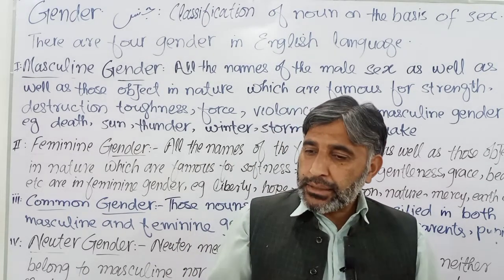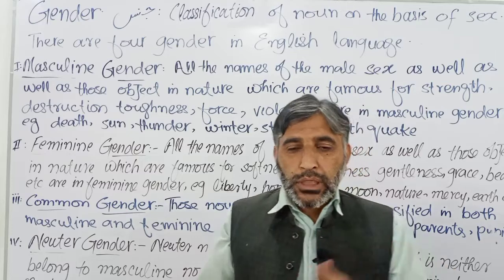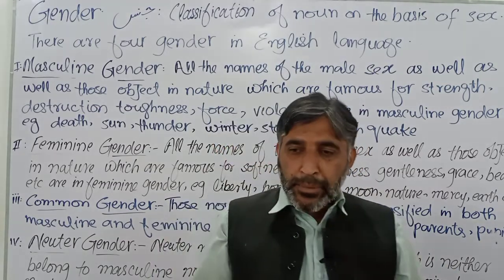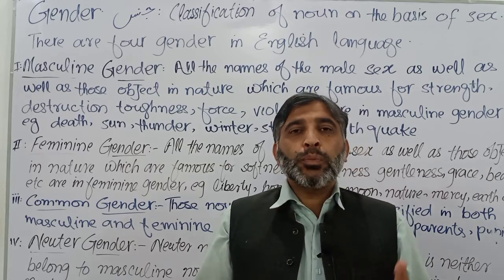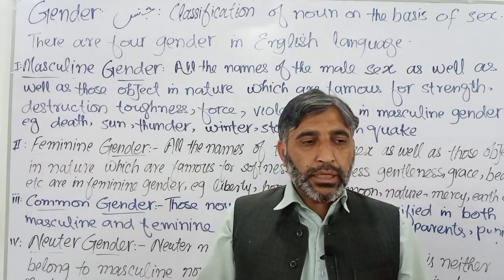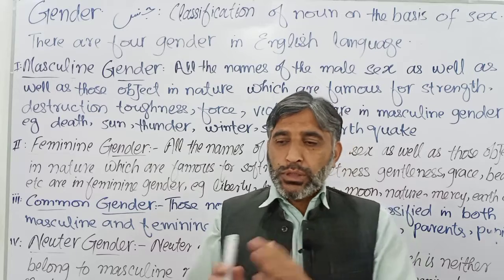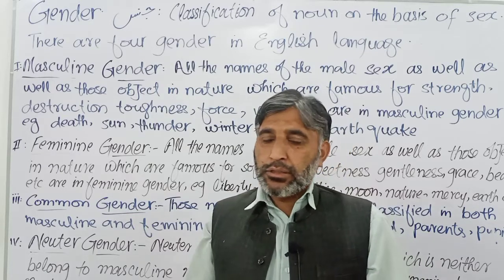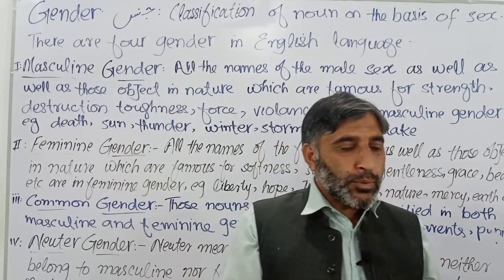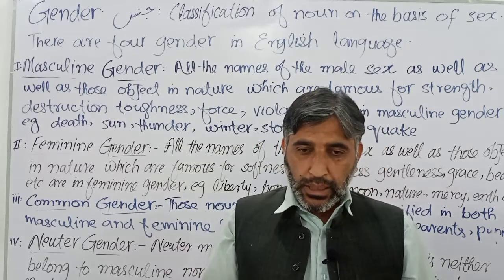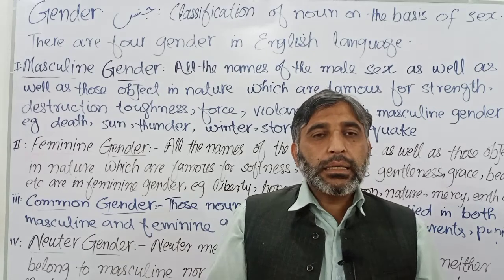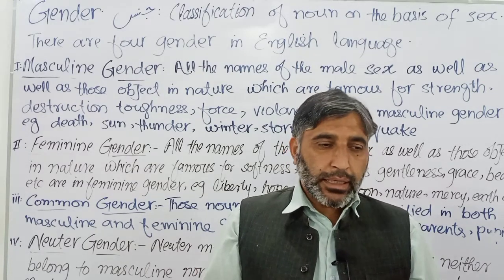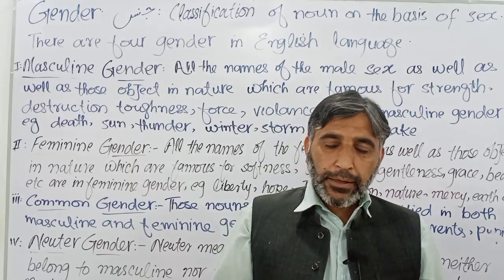Gender ka matlab hai — kins: koi muzakkar hai, muannas hai, ya neuter hai, ya common gender hai. Aam taur par Urdu aur Pashto mein do gender hain — muzakkar aur muannas — chahe jaandar cheezein hon ya bejaan cheezein hon, hum unhe ya to muannas bolte hain ya muzakkar bolte hain. Lekin is ke baraks English language mein chaar gender hain.